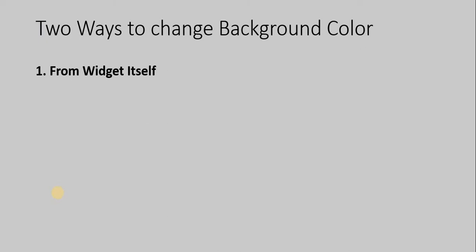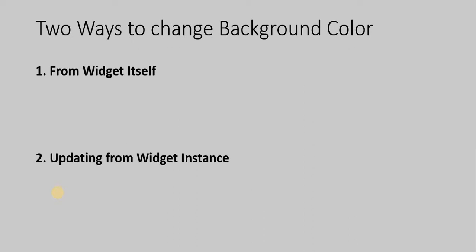There are two ways to change the background color. The first one is from the widget itself, and the second one is updating the widget instance. There are advantages and disadvantages of both ways. With the first one — making changes on the widget itself — it will affect all the widgets wherever it is being used.